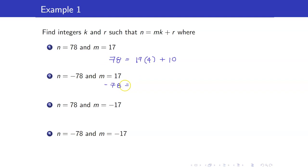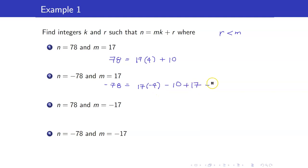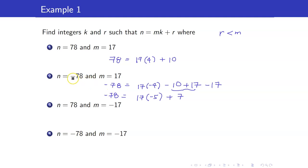Multiplying both sides of 78 equals 17 times 4 plus 10 by negative 1, we get negative 78 equals 17 times negative 4 minus 10. However, we do not want a negative remainder, since the remainder must be greater than or equal to 0. The trick is to always add m. Since our m is 17, we add 17 to the remainder side and subtract 17 from the other term. This gives negative 78 equals 17 times negative 5 plus 7, giving k equals negative 5 and r equals 7.